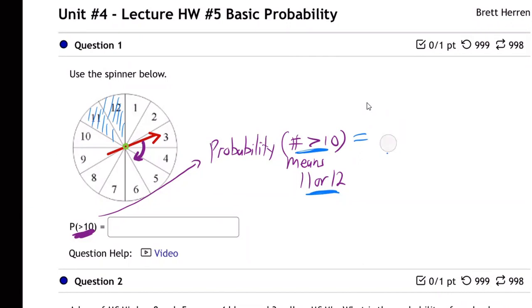You know how probability works. It's 11 or 12 out of the total number of regions. So it's two regions out of 12.